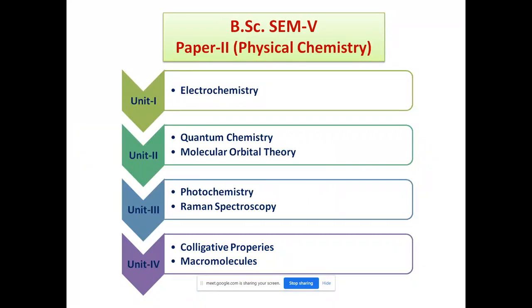Now in BSc SEM5, there are two papers. Paper 1 is inorganic chemistry and paper 2 is physical chemistry. During this session I am going to discuss about physical chemistry, that is paper 2.